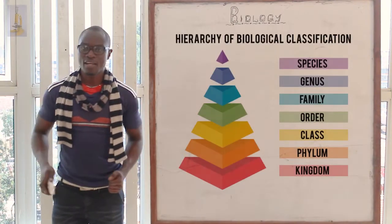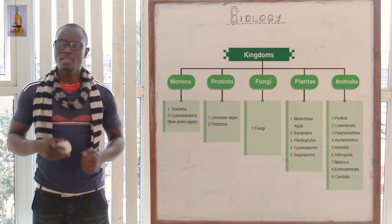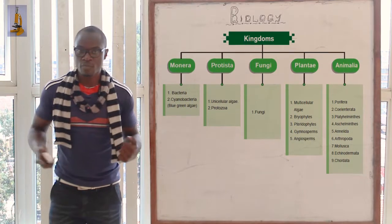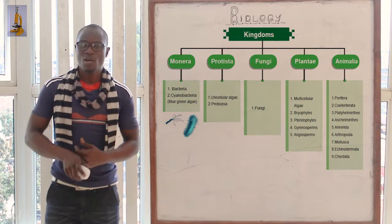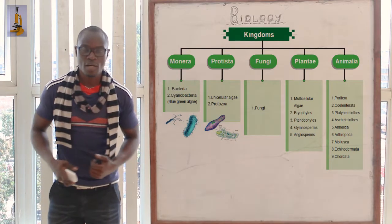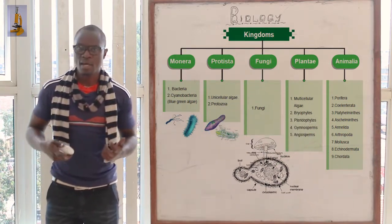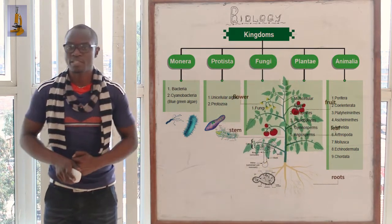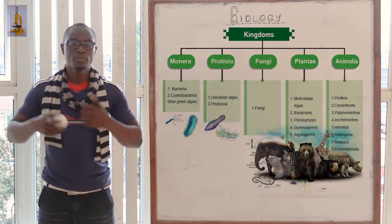Welcome back to this next class. In the first part we looked at classification. Now let's look at the kingdoms. We have five kingdoms: kingdom Monera comprising of bacteria; kingdom Protoctista comprising of algae and protozoa; kingdom Fungi comprising of mushrooms, yeast and mould; kingdom Plantae comprising of all plants; and kingdom Animalia comprising of all animals.